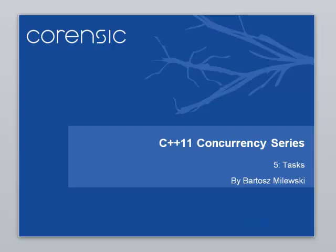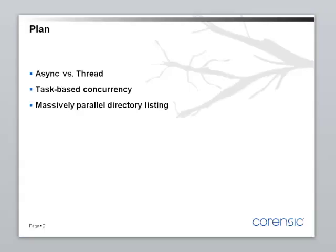Hi, this is Bartosz Miluski with the fifth installment of the C++11 concurrency series. You might remember that last time I introduced the function async, which is used to create tasks that are very similar to threads. So today I would like to explain what tasks are, what task-based concurrency is, and also give you an example of a massively parallel program.